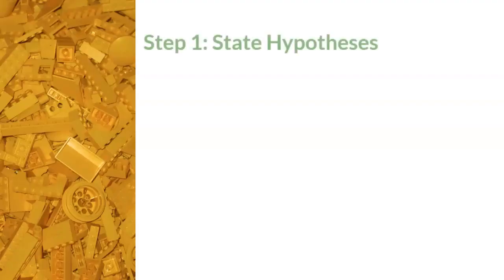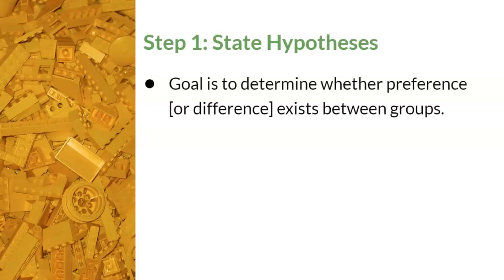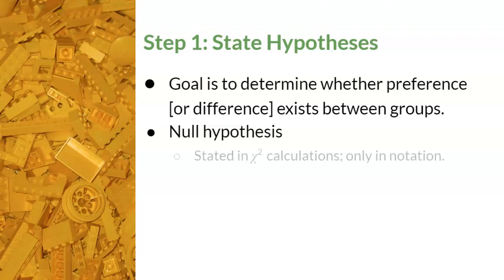Step 1, the yellow Lego, is to state hypotheses. This step will be modified because we're determining whether a preference or difference exists between the groups. The null hypothesis is determined first in order to calculate the chi-square, and thus it has already been stated in the chi-square calculations. We will only report the null hypothesis in notation — there will be no written sentence for it.